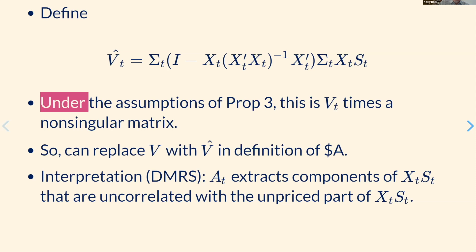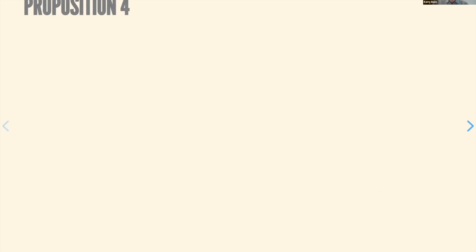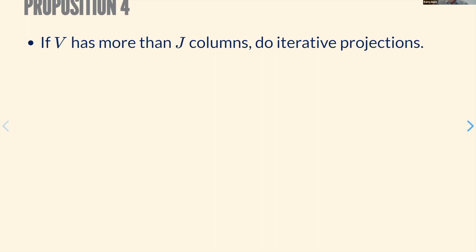Proposition 4 addresses the case where there are more than J columns in the covariance decomposition that are correlated with X — in that case you can do iterative projections. The last part of the paper is about dimensionality reduction.